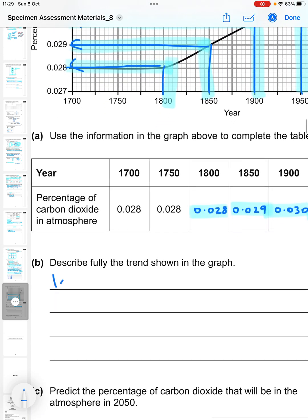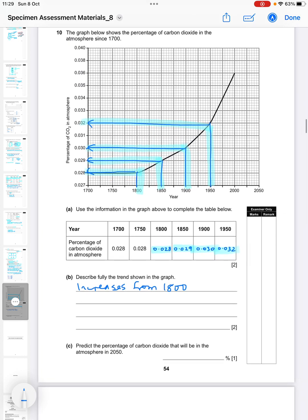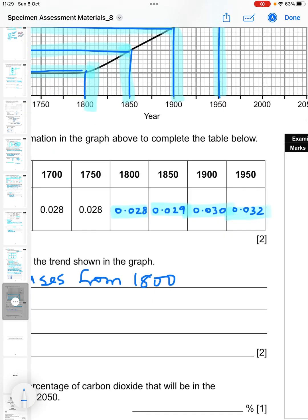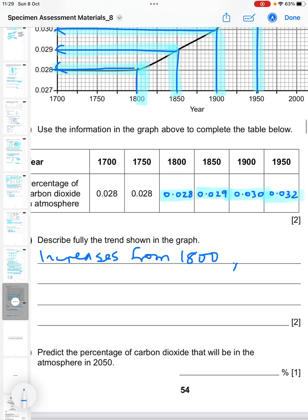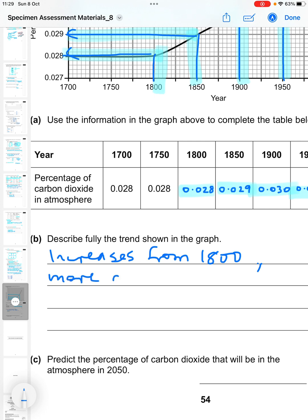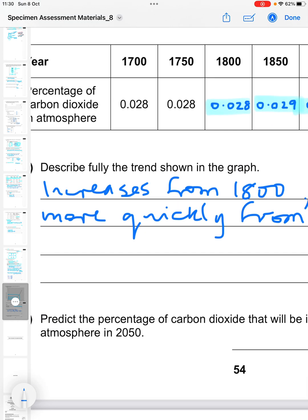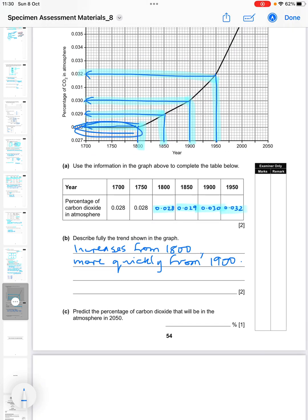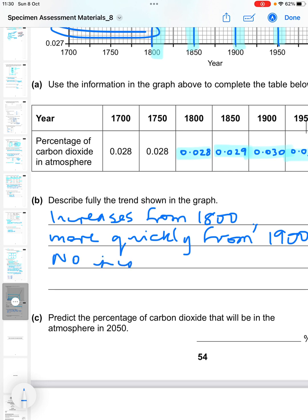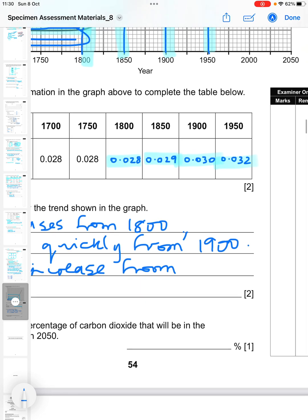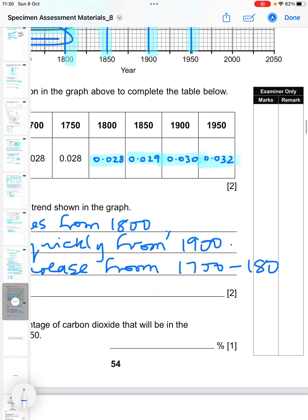Now describe fully the trend in the graph. What you would need to say is that it increases from 1800, and it increases more quickly from 1900. The other thing that you needed to say - you see this portion of the graph here is flat - so no increase from 1700 to 1800. Those of you who complain about my writing can see why I do this in advance, because my writing is even worse if I'm trying to do it here.